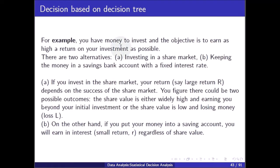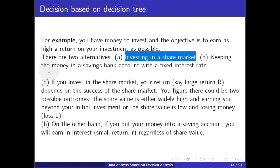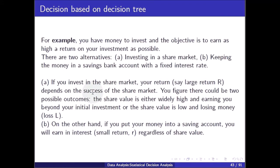Now, decision-making based on a decision tree. For example, you have money to invest and the objective is to earn as high a return on your investment as possible. There are two alternatives: invest in the share market, or keep the money in a savings bank account with a fixed interest rate. If you invest in the share market, your return depends on the success of the share market. There could be two possible outcomes: the share value is either widely high, earning you beyond your initial investment, or the share value is low and you lose money. On the other hand, if you put your money into a savings account, you will earn interest regardless of share value.